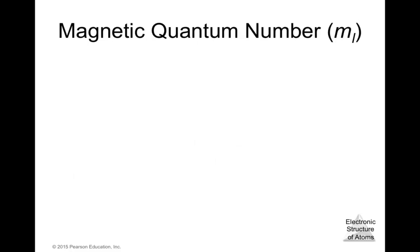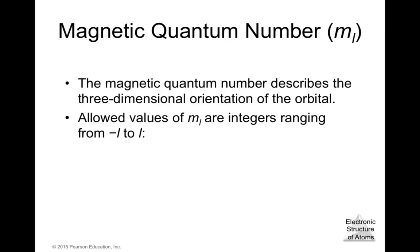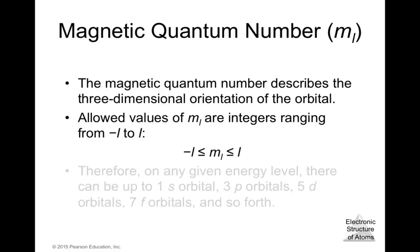The third quantum number is the magnetic quantum number m_l, which describes the three-dimensional orientation of the orbital. Allowed values of m_l are integers ranging from −l to +l, going through zero. Therefore on any given energy level there can be up to one s orbital, three p orbitals, five d orbitals, seven f orbitals, and so forth.